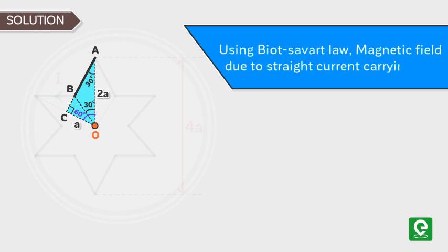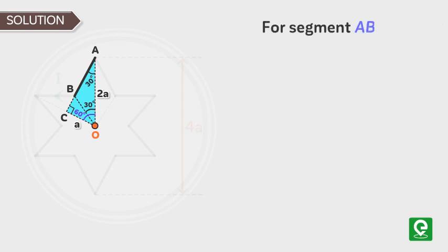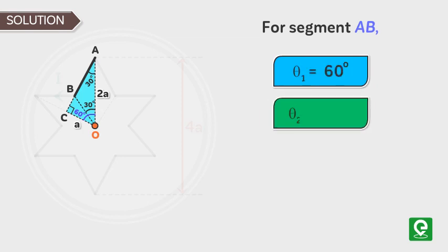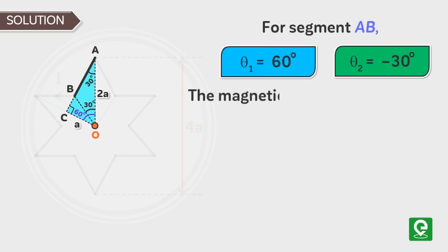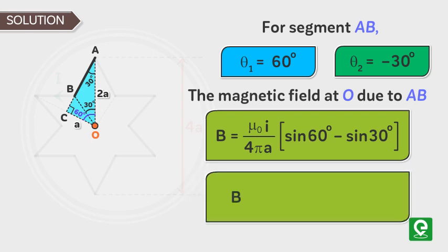Using Biot-Savart Law, magnetic field due to a straight current carrying wire is given by mu naught I upon 4 pi d into sine theta 1 plus sine theta 2. For segment AB, theta 1 is 60 degrees and theta 2 is minus 30 degrees. The magnetic field at O due to AB is mu naught I upon 4 pi a into sine 60 degrees minus sine 30 degrees. Hence magnetic field due to one segment equal to mu naught I upon 4 pi a into 1 by 2 into root 3 minus 1.